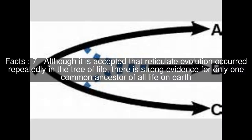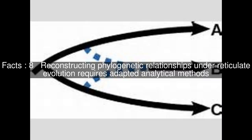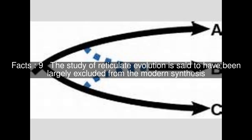Although it is accepted that reticulate evolution occurred repeatedly in the tree of life, there is strong evidence for only one common ancestor of all life on Earth. Reconstructing phylogenetic relationships under reticulate evolution requires adapted analytical methods. The study of reticulate evolution is said to have been largely excluded from the modern synthesis.